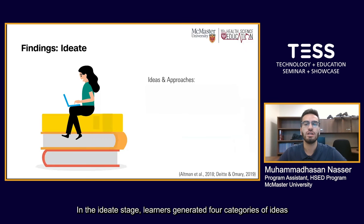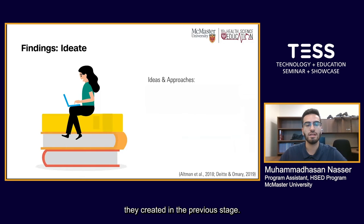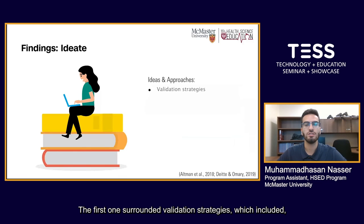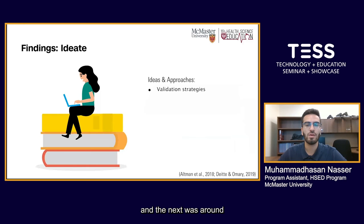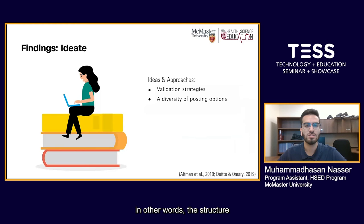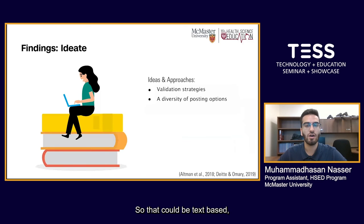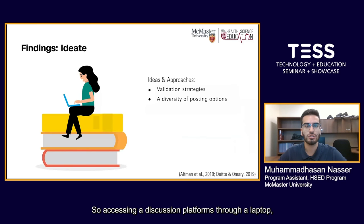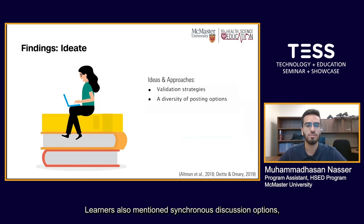In the Ideate stage, learners generated four categories of ideas to address the 'how might we' statements. The first surrounded validation strategies, which included liking and reacting to discussion posts. The next was around a diversity of posting options — both in terms of content structure and substance, as well as format, including text-based, video-based, or audio-based posts, and modality, so accessing discussion platforms through a laptop, smartphone, or tablet.